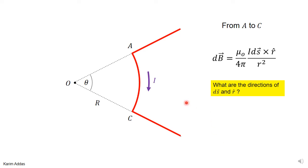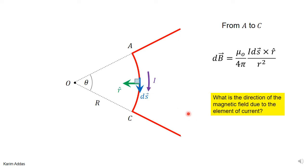So the only part that contributes is the curved arc from A to C. For any element of current along the arc, ds points in the direction of the current along the wire, and r-hat points from that element toward point O. The angle between them is always 90 degrees for every element from A to C, and that's what makes this problem easier to solve.